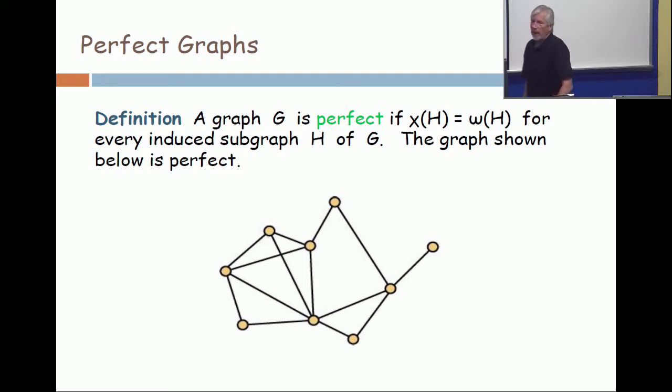Now look at the graph that I've shown. For the whole graph, what is the maximum clique size? Four. Everybody see a four clique in there? All right, now just kind of look at it. Can you color that with four colors? Sure. Okay, now does that prove that the graph is perfect?